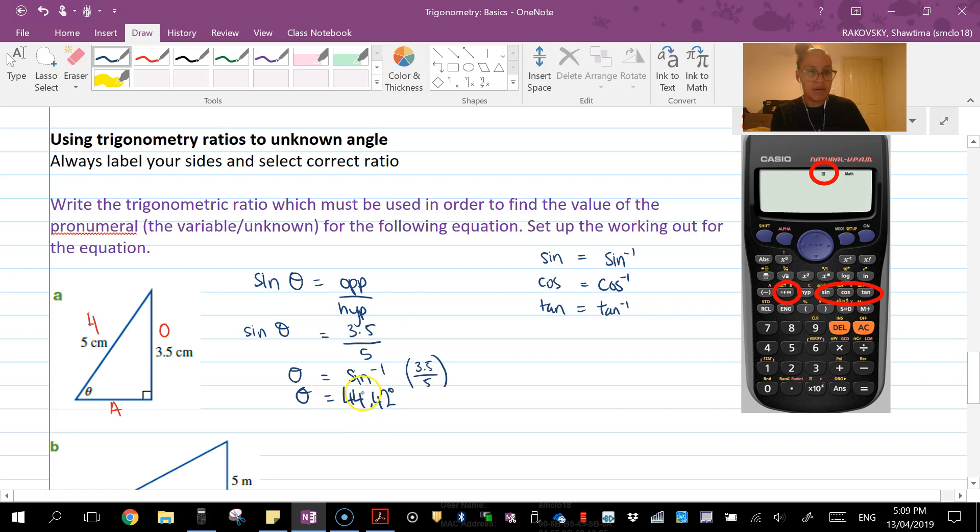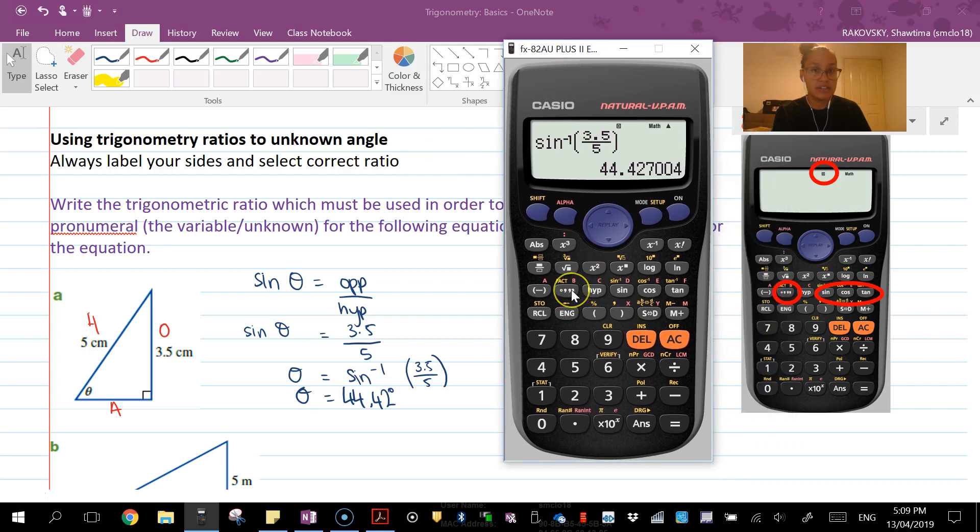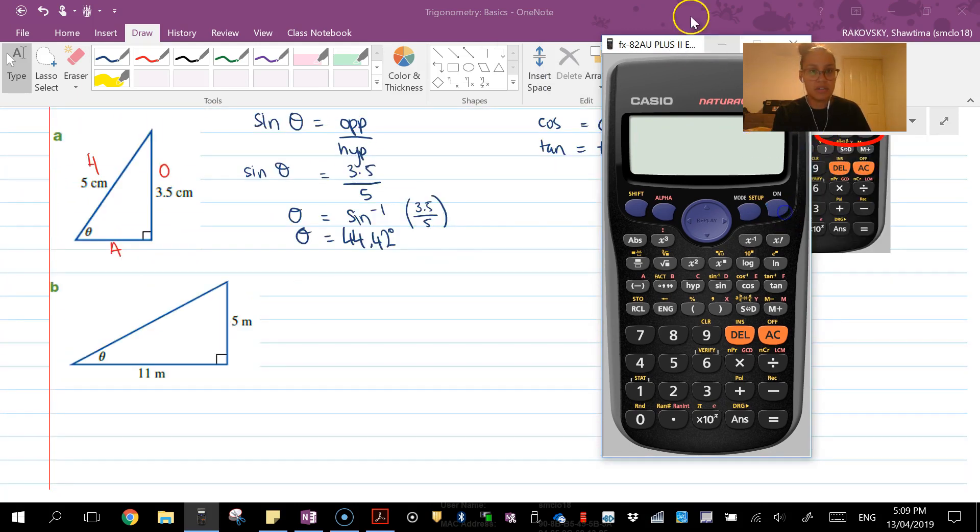That gives me 44.42 degrees. That's in decimal degrees. There are ways of converting to degrees and minutes. If the question asks you to convert, just hit that circle comma double comma and it will give you the answer as 44 degrees 25 minutes and 37.21 seconds. That's how you convert between the two formats of degrees.